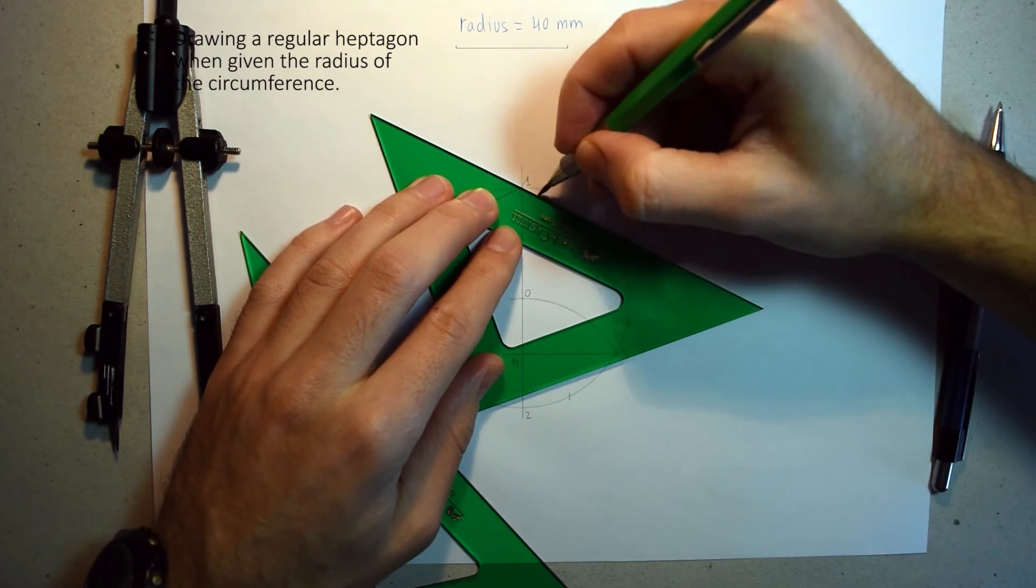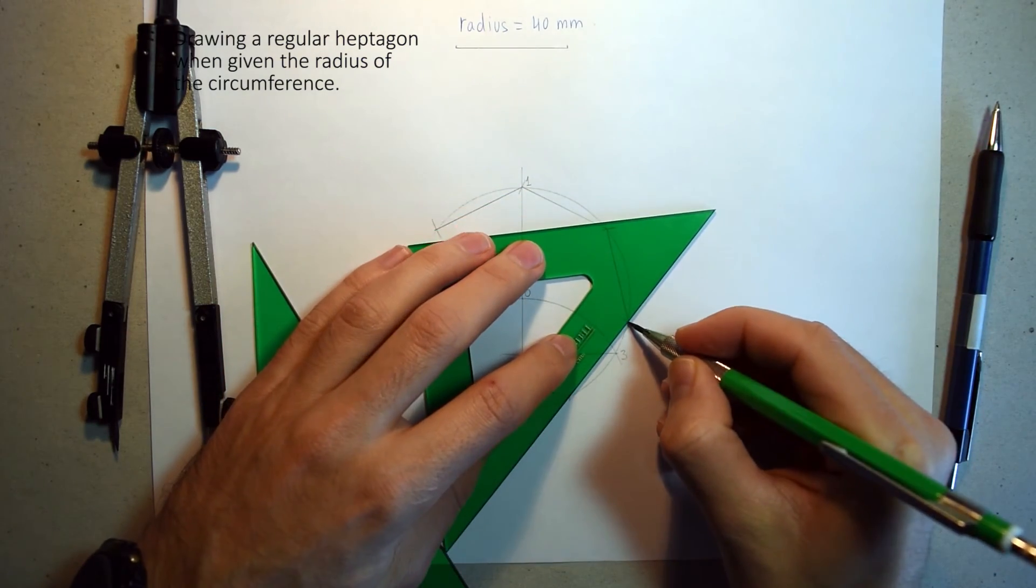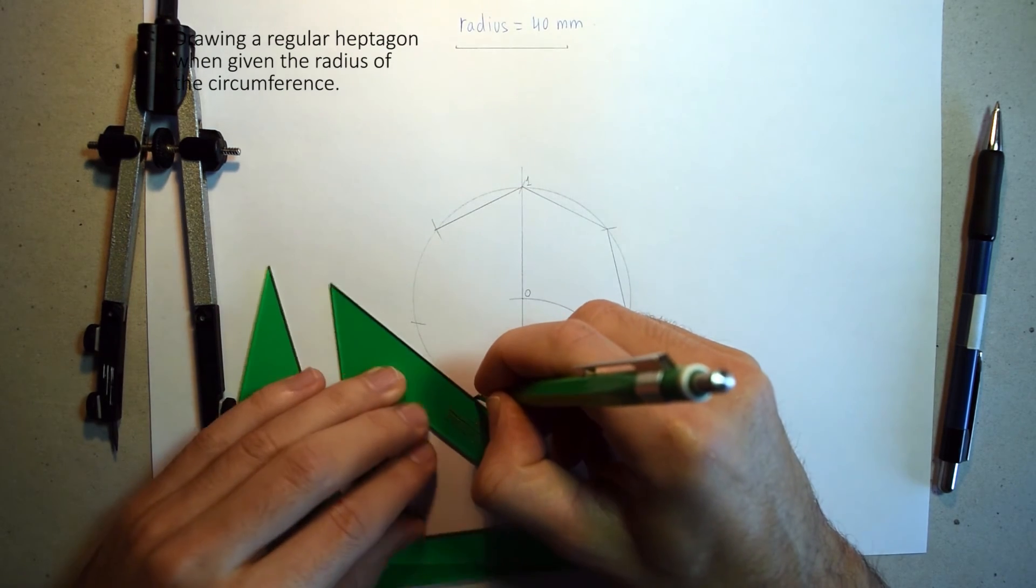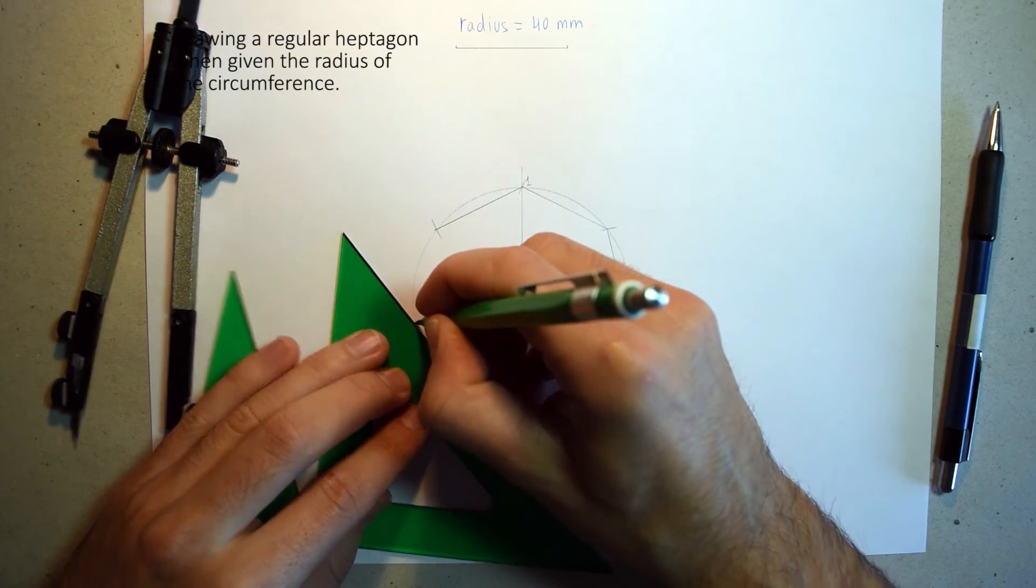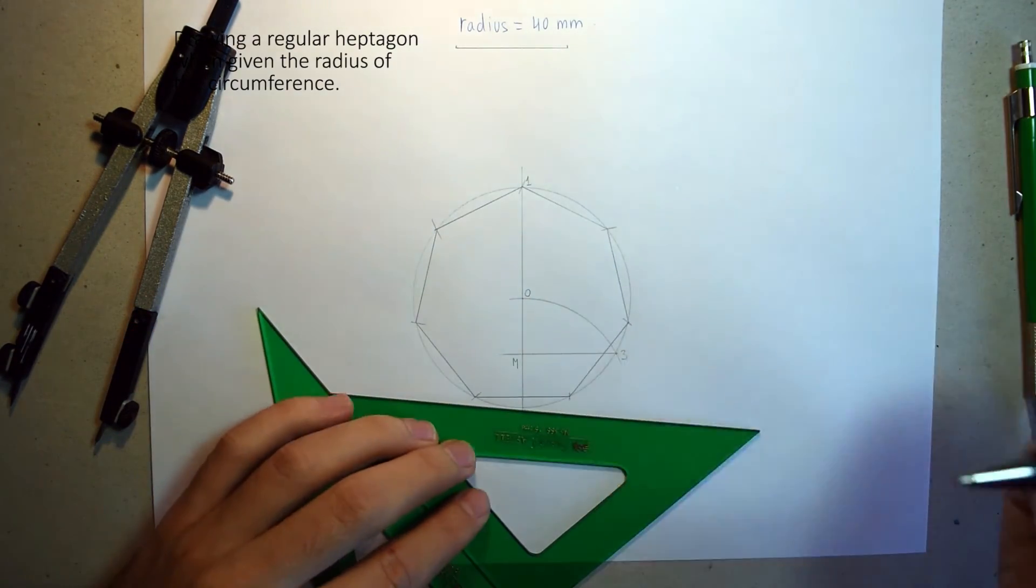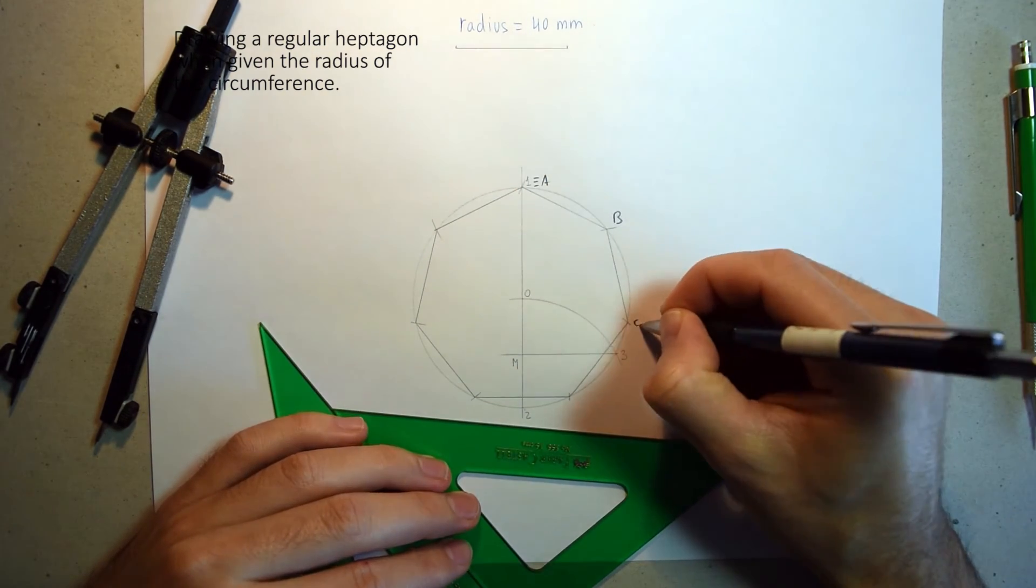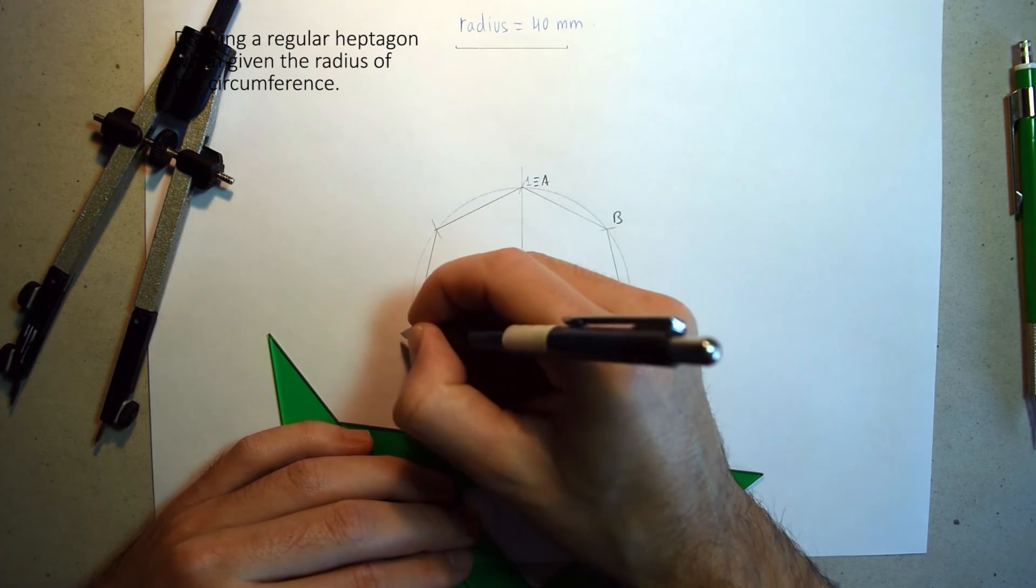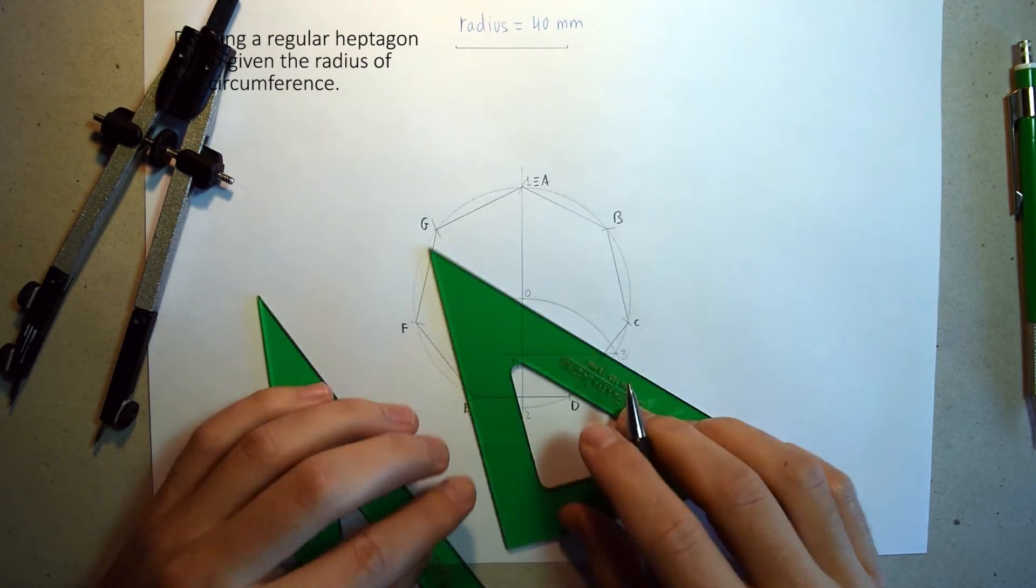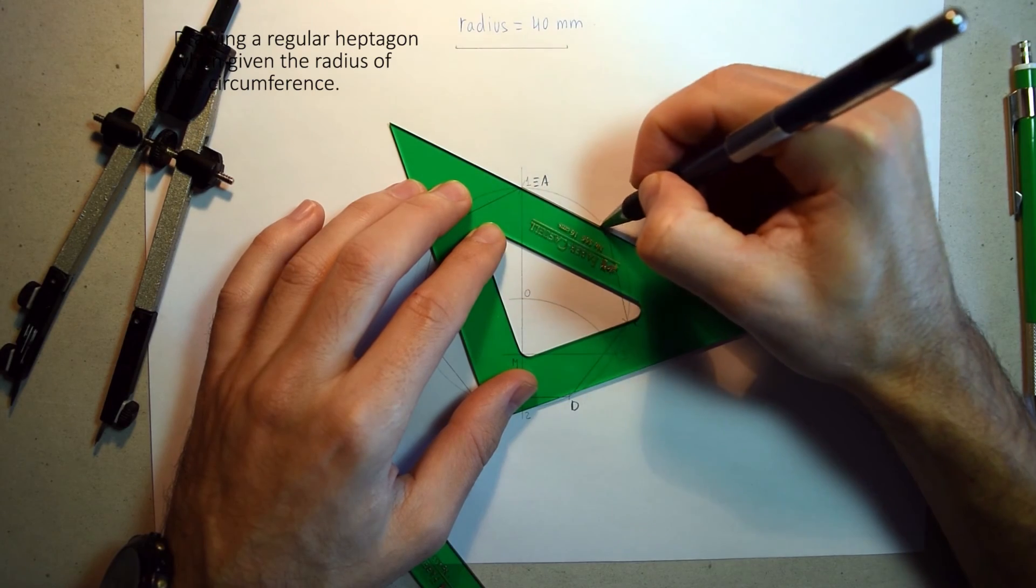And that's the heptagon. We can label the vertices as A, B, C, D, E, F, G. And we can join and go over the sides.